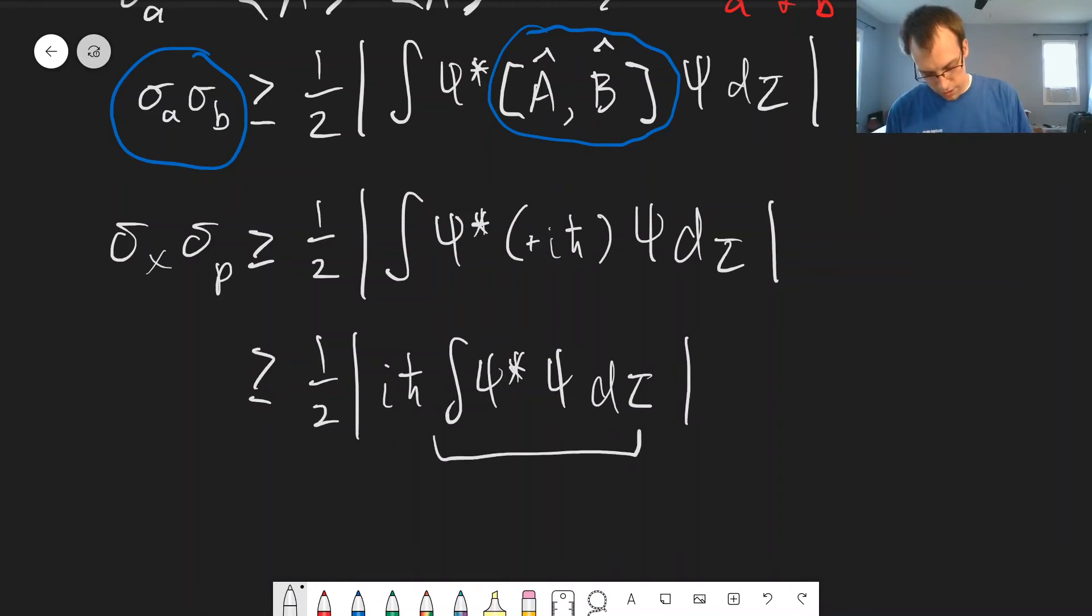But this part is just going to be equal to one, this is just the normalization integral. So if we assume that these wave functions are well behaved and normalized, which is our postulates, we get left with one half times absolute value of i h bar. And a property of i is the absolute value of i is equal to one.